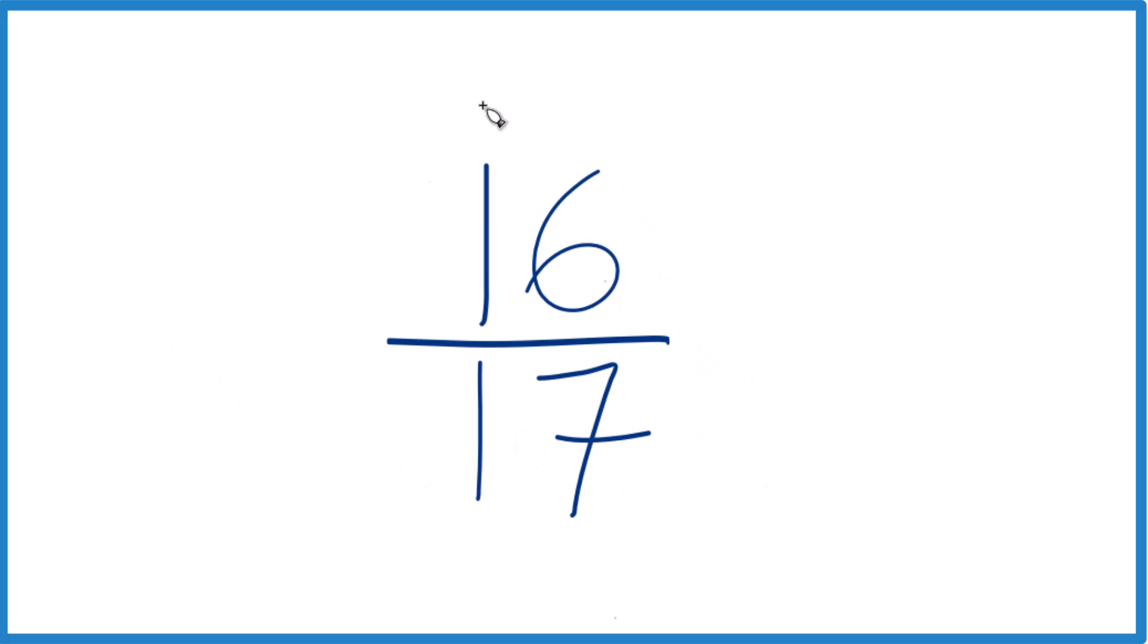So to do that, we want to find a factor, that's a whole number that goes evenly into 16 and into 17. So we're trying to find a common factor, the greatest common factor.